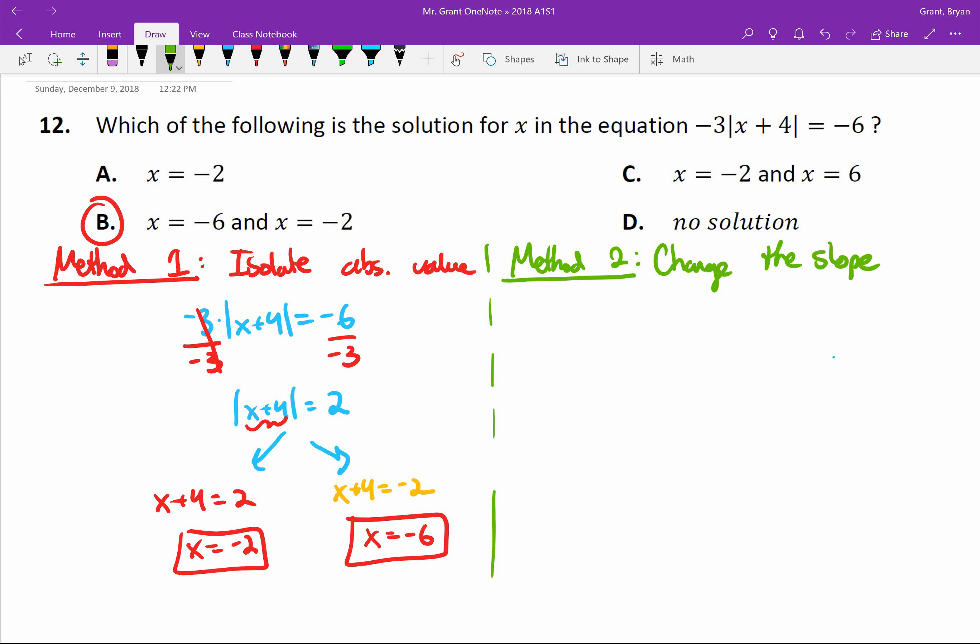So when you change the slope, we need to recognize that in this equation up here, the number multiplying by x is our slope. I'm going to make two different slope equations. One of them is going to be negative three parentheses x plus four equal to negative six, and the other equation is going to be positive three parentheses x plus four equal to negative six. And now these are equations that we can solve either by distributing or dividing, whatever you'd like to do, and I'll show you both.